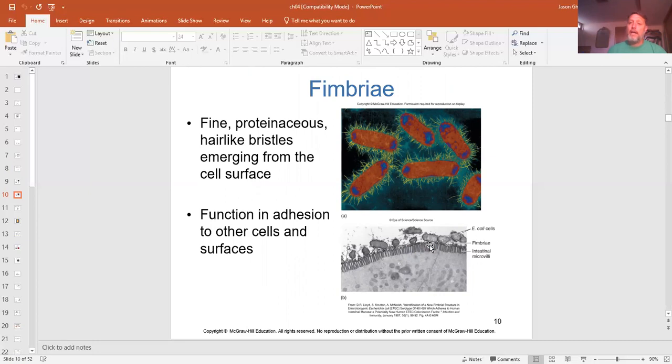Now, fimbriae are an external appendage sticking off, but they're small and they're bristle-like. And these are more for attachment instead of movement. Like flagella for movement, fimbriae are for attachment. They have some that are color enhanced and showing the fimbria. And down here they show some E. coli that are using the fimbria to attach themselves to the microvilli of the intestine.